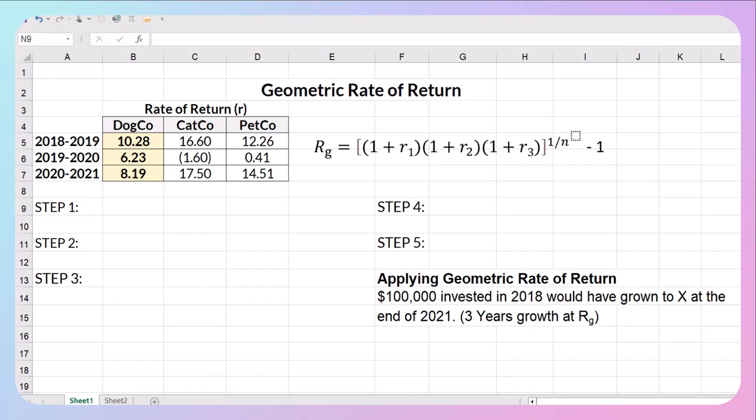In my first step I'm going to take these rates of return and convert them back to decimals. So that's a percentage so that becomes 0.1028. This one becomes 0.0623. This one becomes 0.0819.